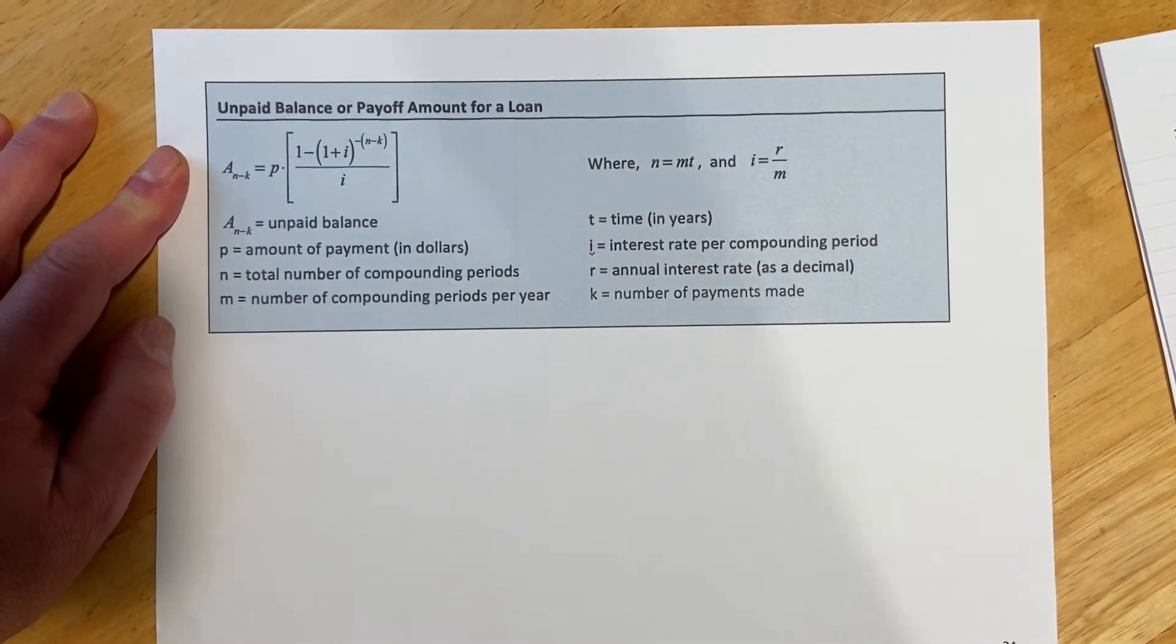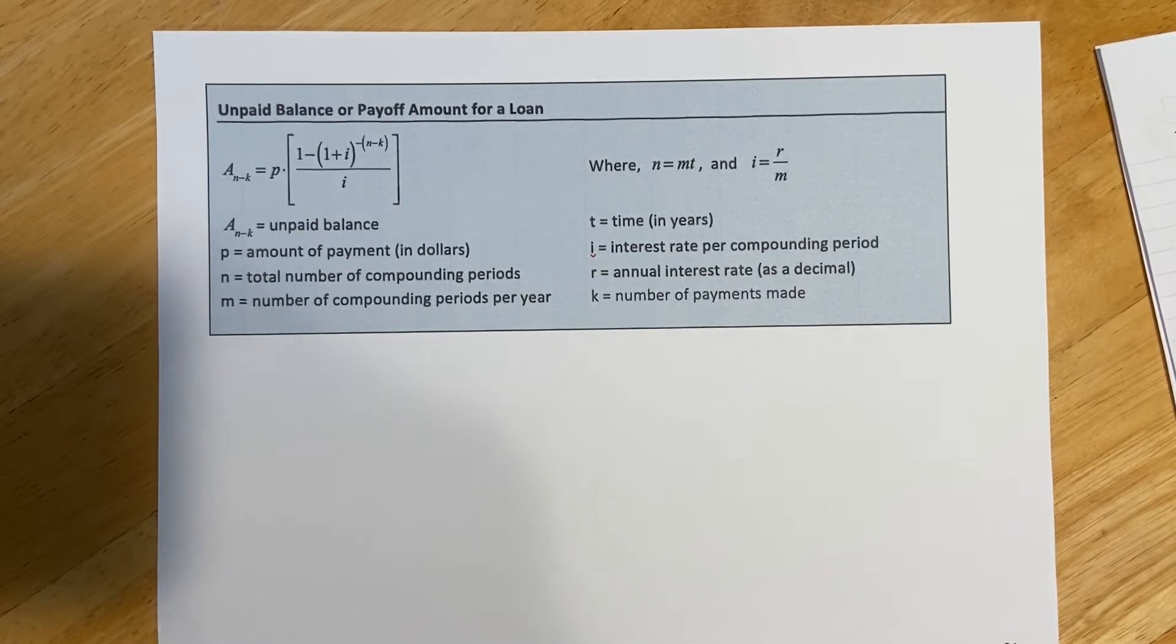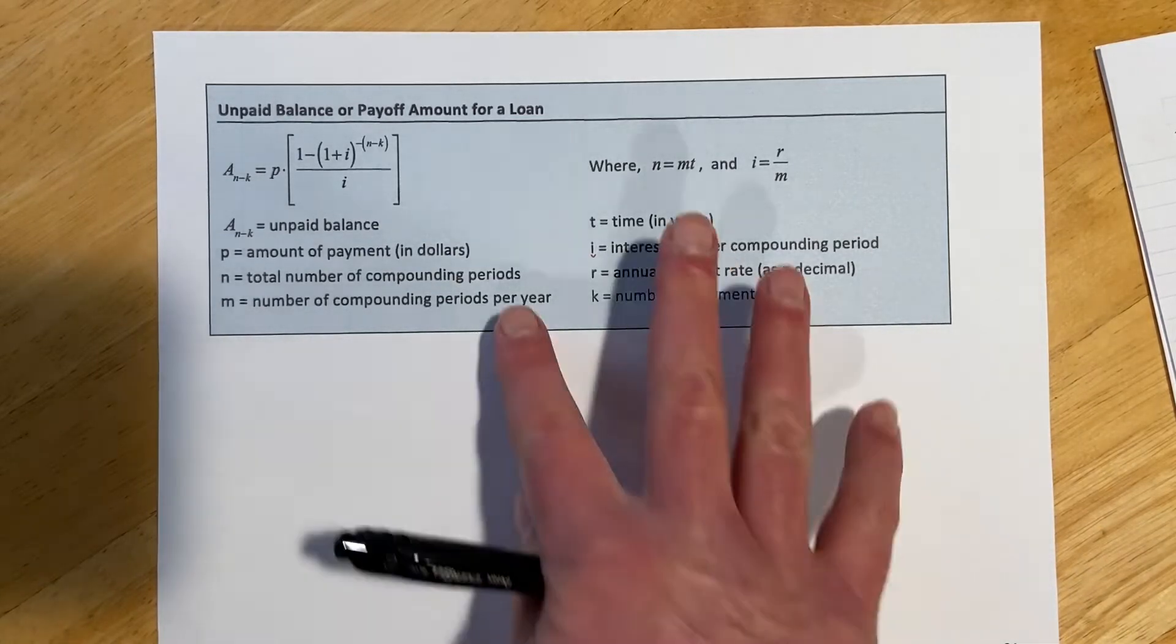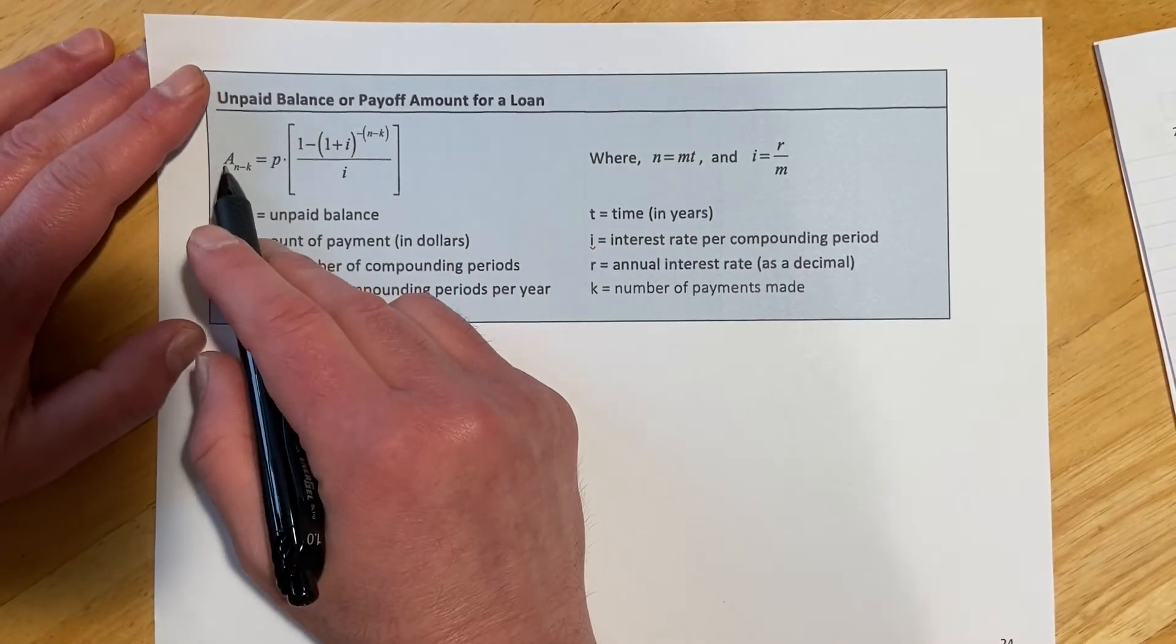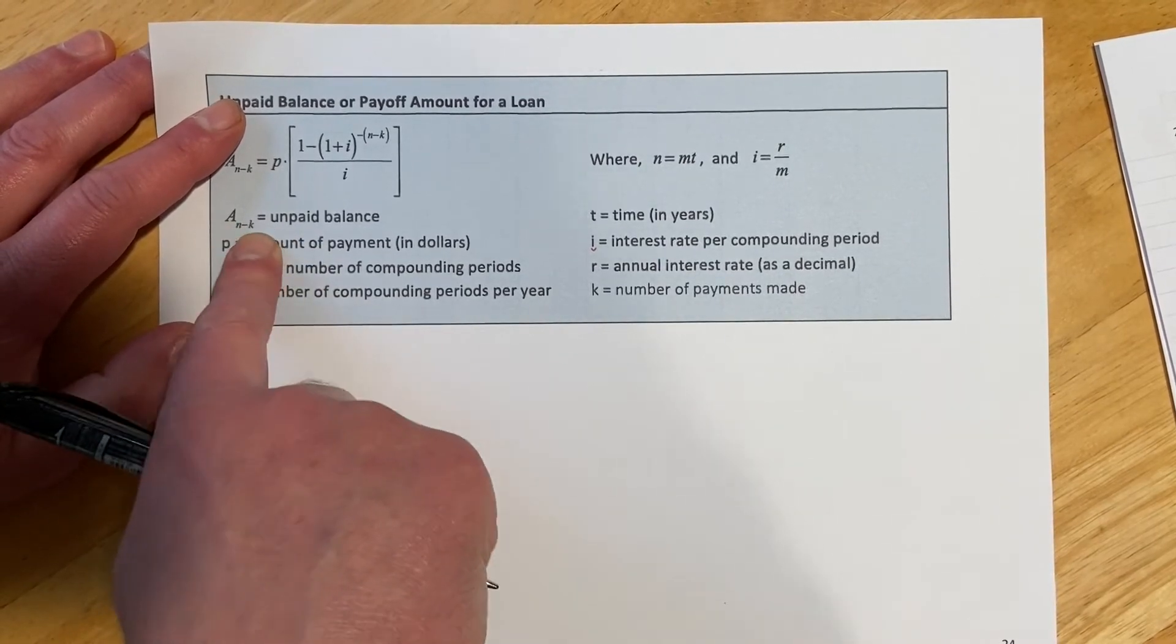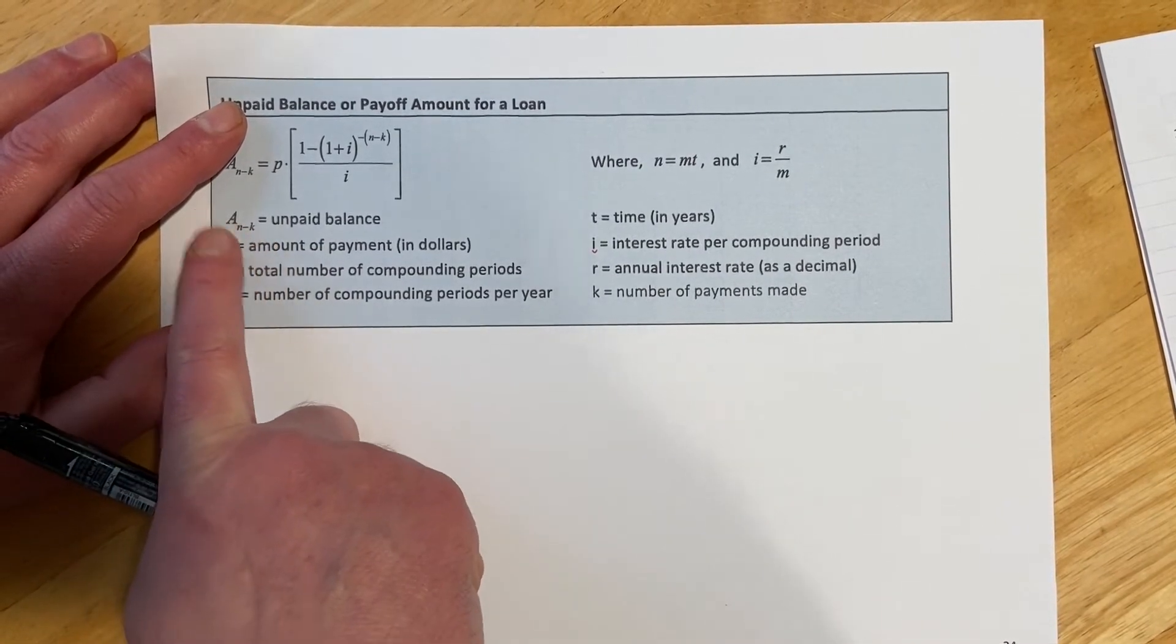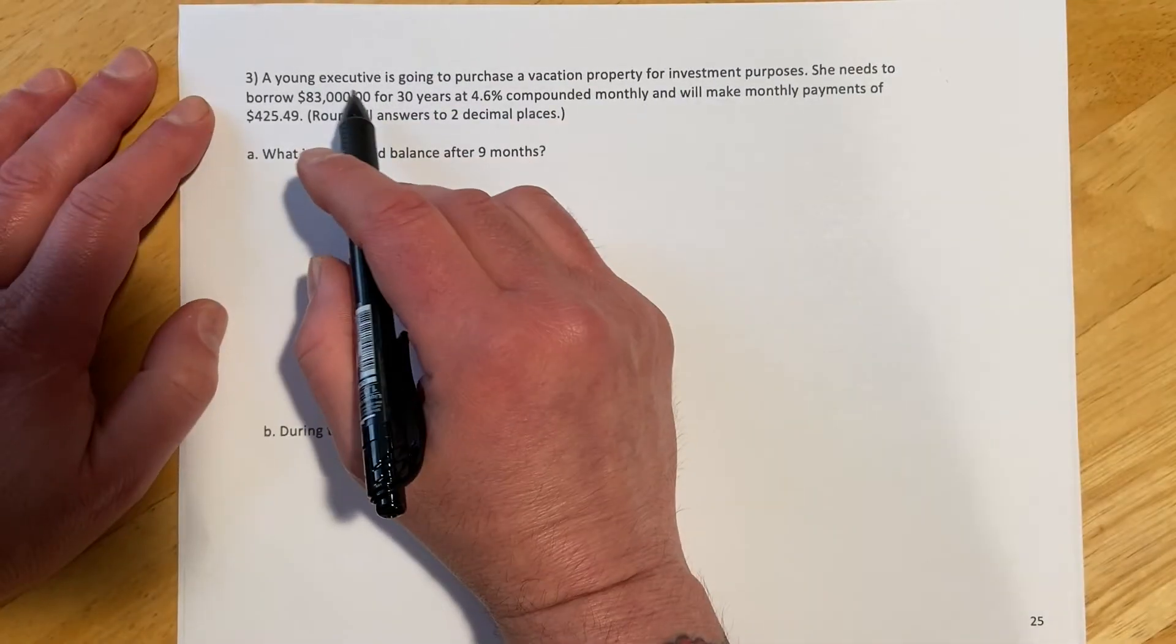Okay, and then the last thing in this section is unpaid balance. So this would be a situation like you're so many payments into, you know, like a car loan and you want to see how much it is to just pay it off. So that's kind of what we're finding with this. Here, the new quantity is A sub N minus K. So what that's going to do is it would show the number of payments for that unpaid balance.